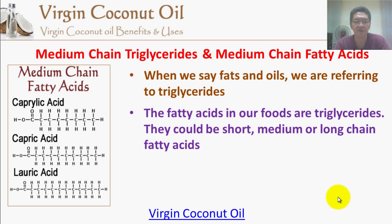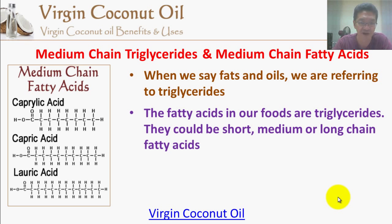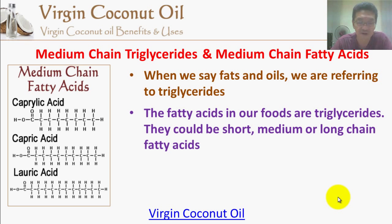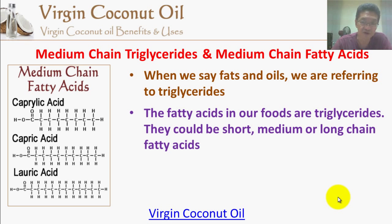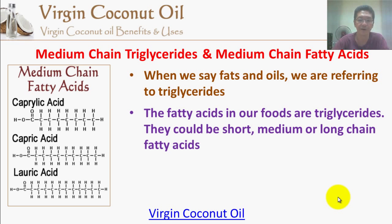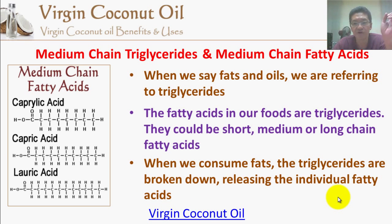Triglycerides are essentially the fats that are in our food, and they could be short chain, medium chain, or long chain fatty acids. The spare tire around your stomach, your thighs, under your arms — these are triglycerides. These are fats that are consumed and, depending on their effects, most of them are converted into triglycerides and stored in those places.